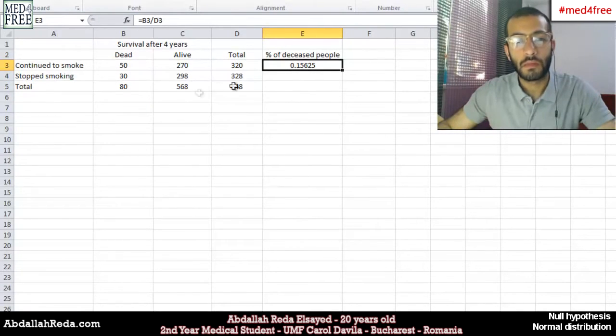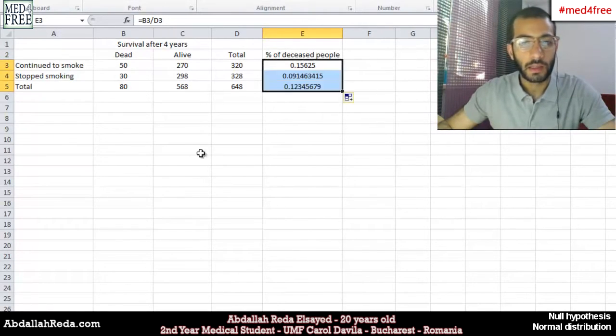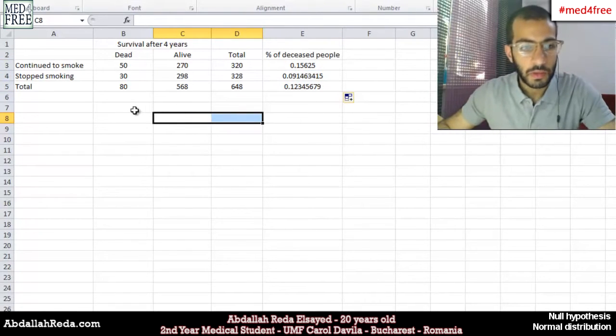In order to perform the same operation for the rows below, we just go to the corner of the cell where the cursor changes and we drag like this and we get our values.